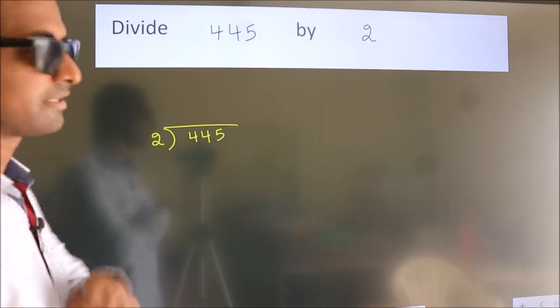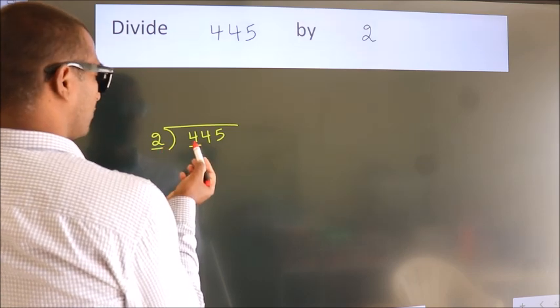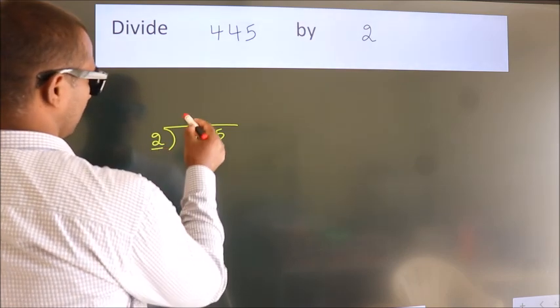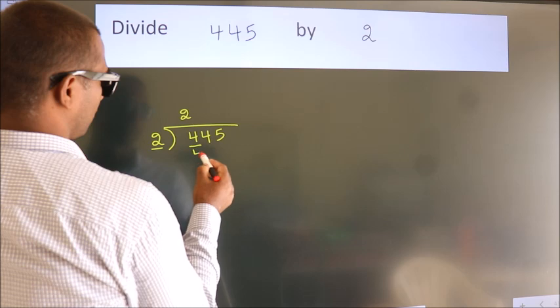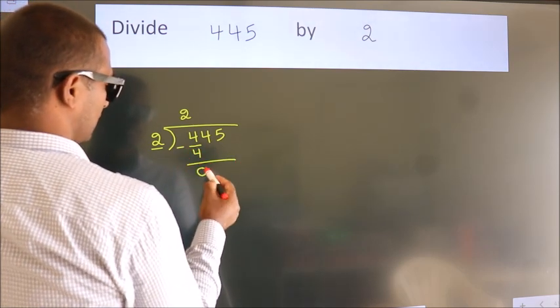Next. Here we have 4, here 2. When do we get 4? In 2 table, 2 twos, 4. Now we should subtract, we get 0.